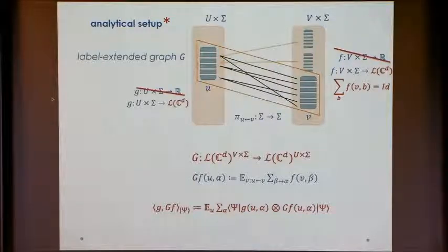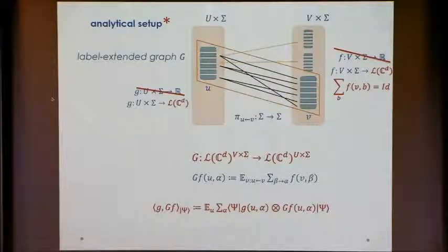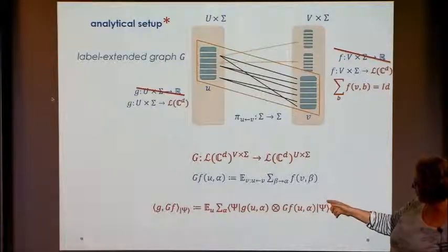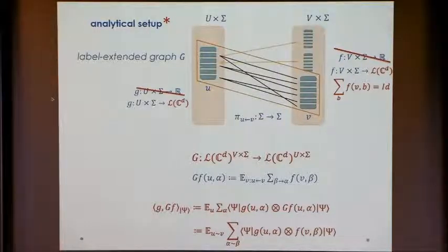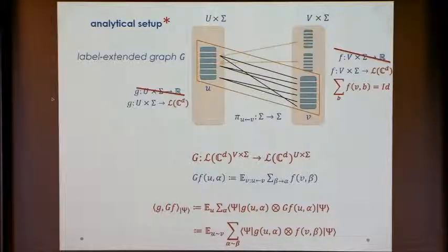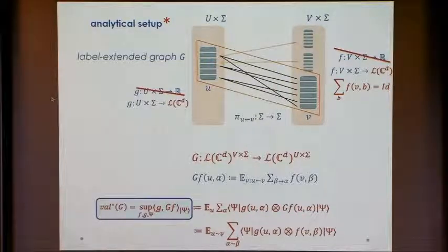We have the description of the value as a bilinear form in the quantum case too. Instead of multiplying scalar values G(u,alpha) times F(v,beta), we take the tensor of the two measurements and apply them to the entangled state psi. This gives the winning probability. If you maximize over all possible strategies and entangled states, you get what is defined to be the entangled value. G here acts as a kind of super-operator — it maps matrices into matrices — but it's the same G as before depending only on the game.